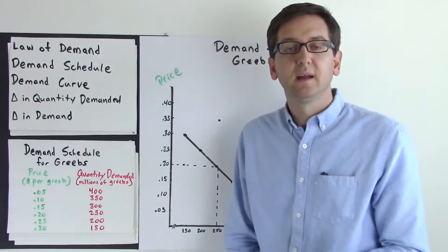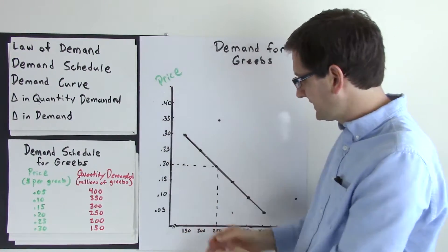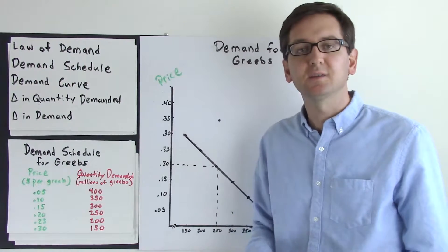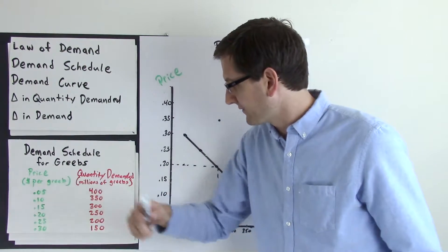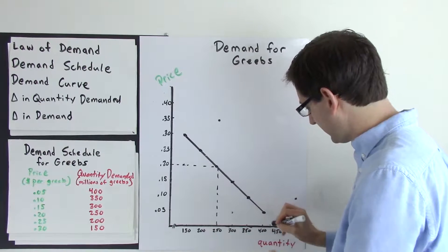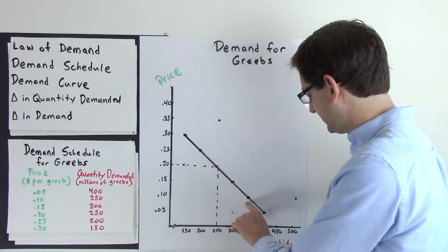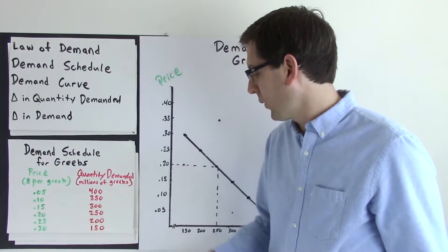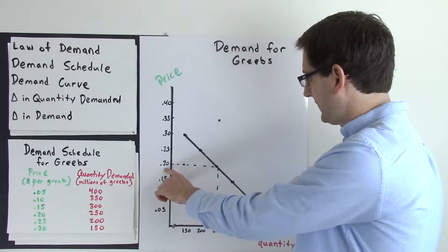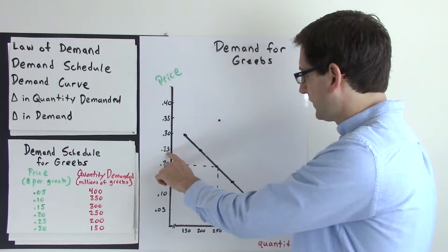We can take these data from the demand schedule and plot them on a graph. The vertical axis is price and the horizontal is quantity, and we can build our demand curve using our demand schedule data. At 5 cents, the quantity demanded is 400 million — we put a data point there. At 10 cents, the quantity demanded is 350 million. At 15 cents, 300 million. At 20 cents, 250 million. At 25 cents, 200 million.